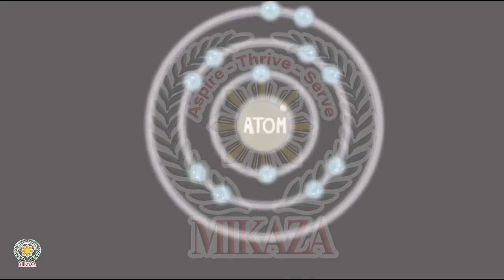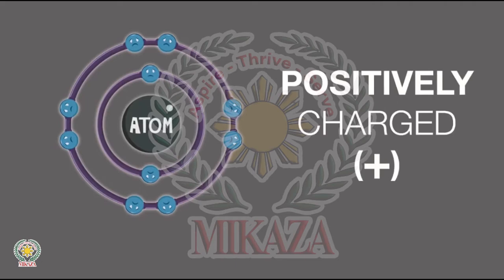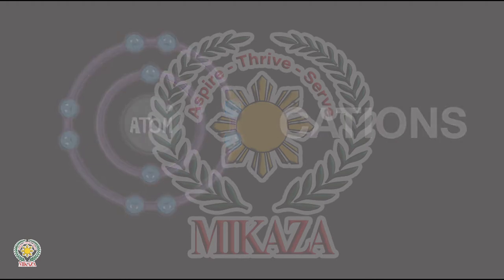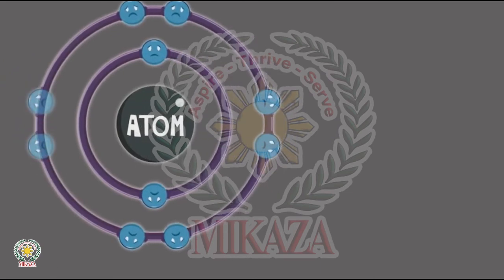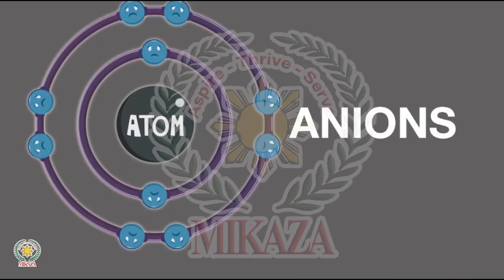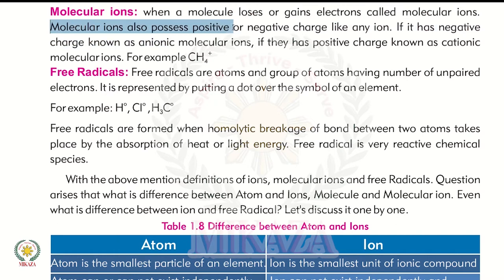Ions basically have two types. One is where electrons go out — the atom loses electrons and becomes positively charged — we call this a cation. The next type is where electrons are gained, giving the atom a negative charge — this is called an anion. We also have molecular ions. Molecular ions are similar, except it is a molecule that loses or gains electrons. When a molecule loses or gains electrons, it is called a molecular ion. Molecular ions also possess positive or negative charge.